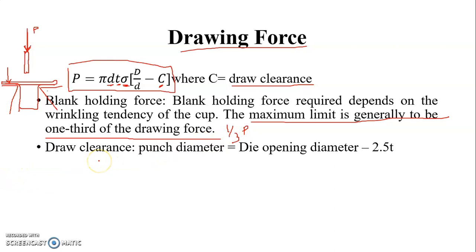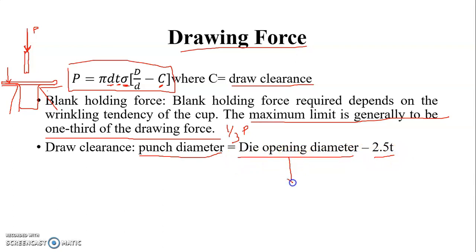Now the draw clearance — we give the clearance between the punch and the die. If there is no clearance between the punch and die, the size we get from this operation will be less than what we want. So we have to give the draw clearance. The punch diameter should be the die opening diameter minus 2.5T. The die opening diameter is this diameter shown here, so: punch diameter = die opening diameter − 2.5T.